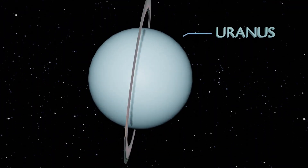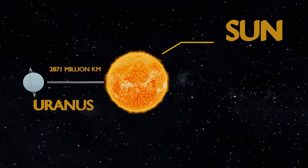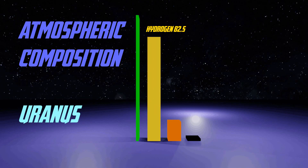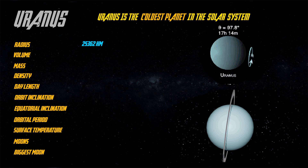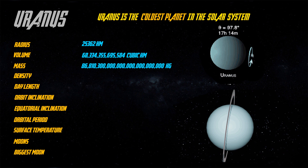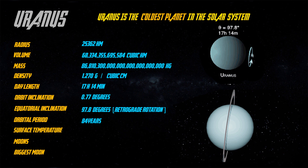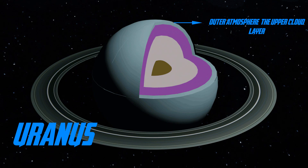Uranus is the coldest planet of our solar system. It is 2871 million kilometers from the Sun. Its atmosphere is mainly made up of hydrogen and helium. It has an inclination of 97.8 degrees, resulting in prolonged days and prolonged nights. It has 27 moons, and its biggest moon is Titania.